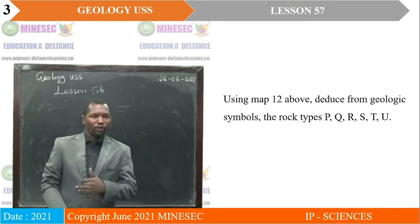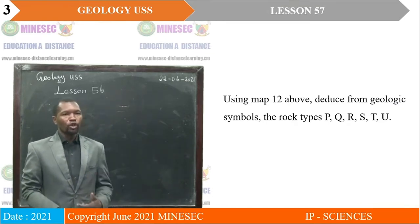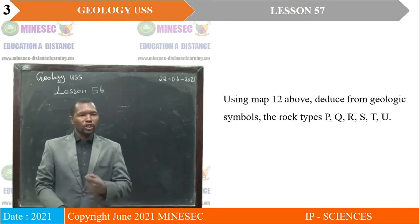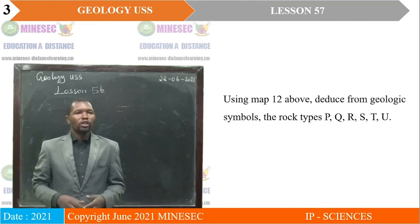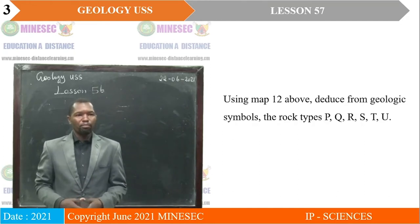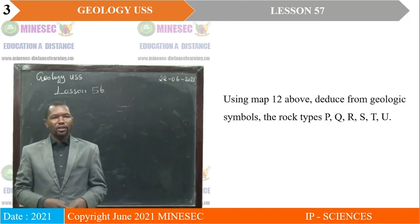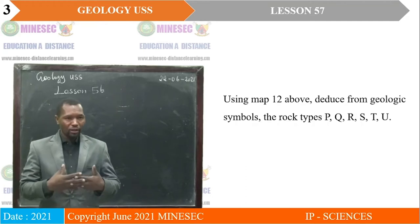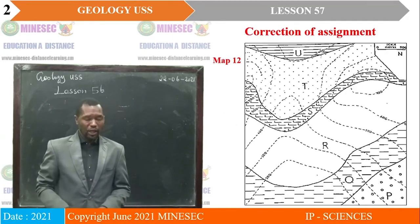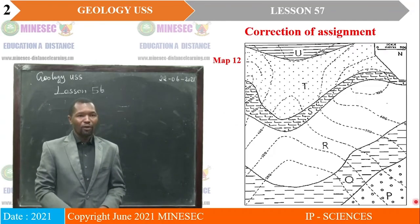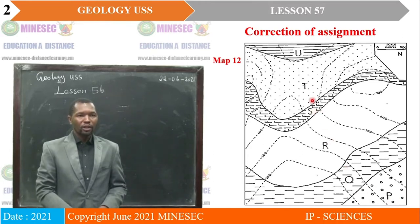Using map 12, deduce from geologic symbols the rock types P, Q, R, S, T, and U. On this map we have rock types P, Q, R, S, T, and U.